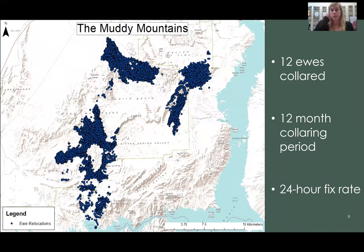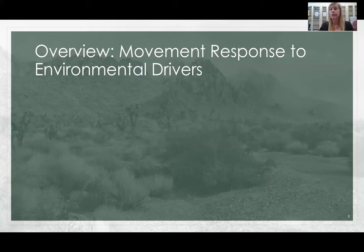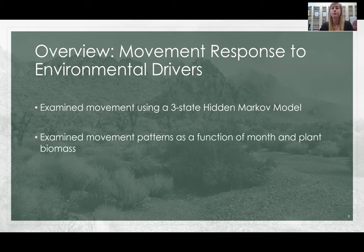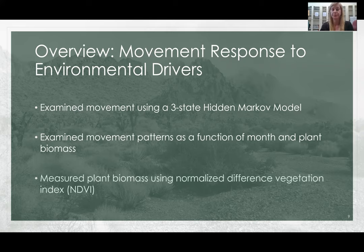We are studying desert bighorn sheep in the Muddy Mountains of Southern Nevada. We had 12 collared ewes during a 12-month collaring period, focused on a 24-hour fixed rate. We examined movement using a three-state hidden Markov model, and we examined these movements as a function of time of year and plant biomass. Plant biomass was measured using a normalized difference vegetation index, or NDVI.